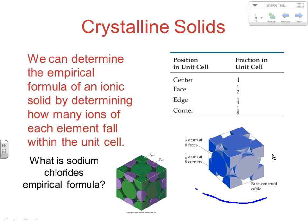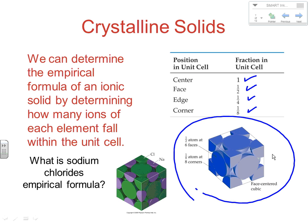In the face-centered arrangement, we have to add up the atoms at the center, face, edge, and corner positions to see what we've got inside. When we add everything up, we can see that we have four chlorides inside the arrangement.